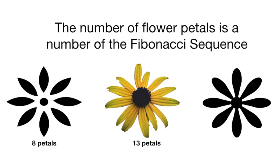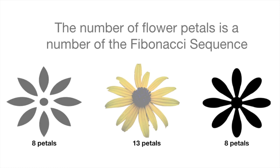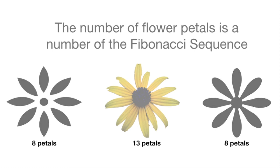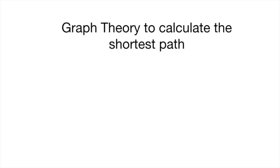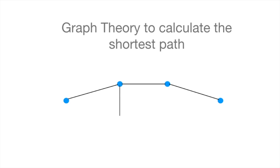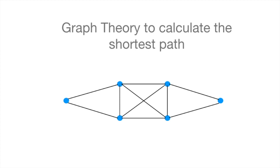For example, some flowers follow the pattern of the Fibonacci sequence for the number of petals they have. Mathematics is also used by people in calculating a more efficient way of doing something. For example, in graph theory, people can calculate the shortest path from point A to point B. Thank you for your views, Aldrich. Now let's move on to the application of mathematics in real-life problems.